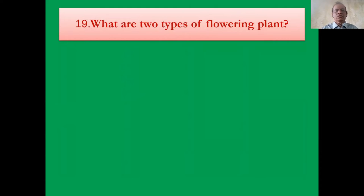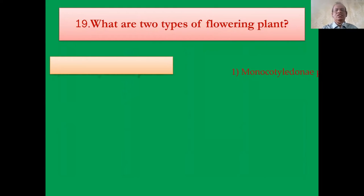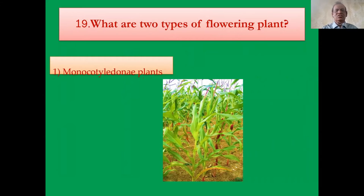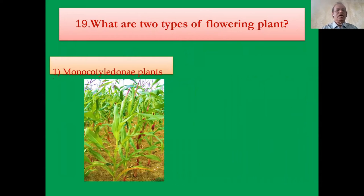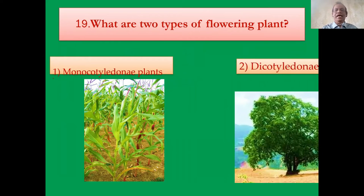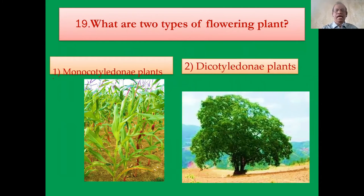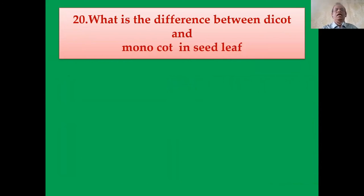What are the two types of flowering plants? First, monocotyledonous plants — examples include bees, sugarcane, grass, and paddy. Second, dicotyledonous plants — examples include mango, jack tree, tamarind, and legume plants.